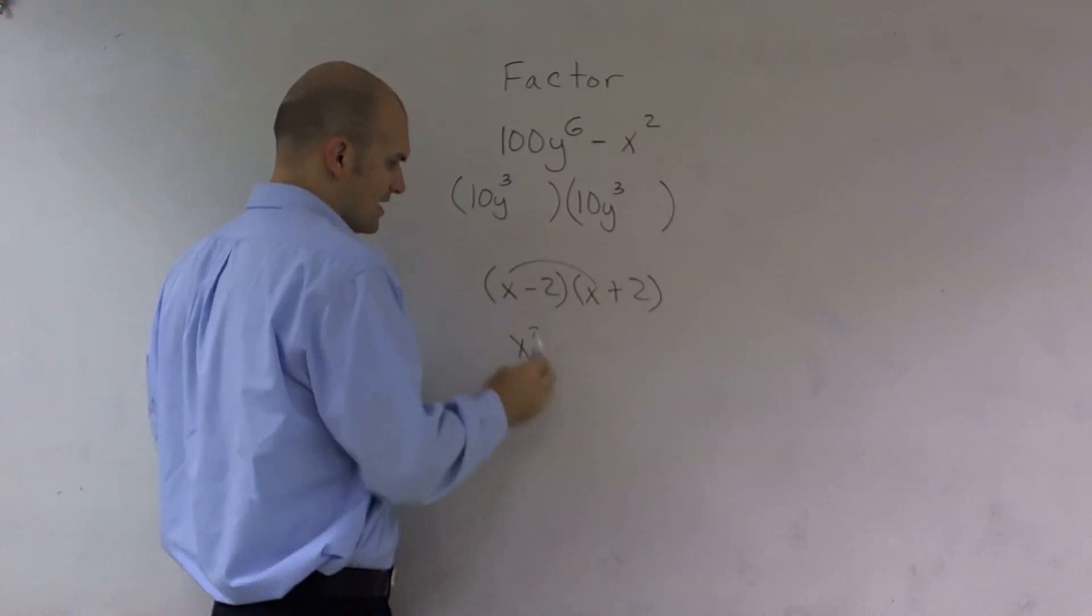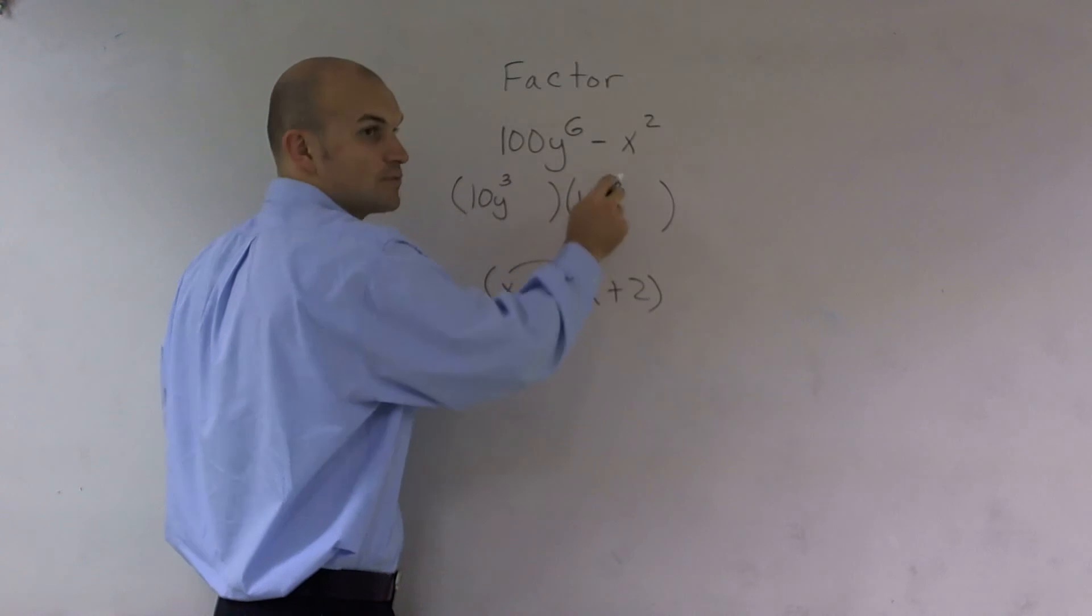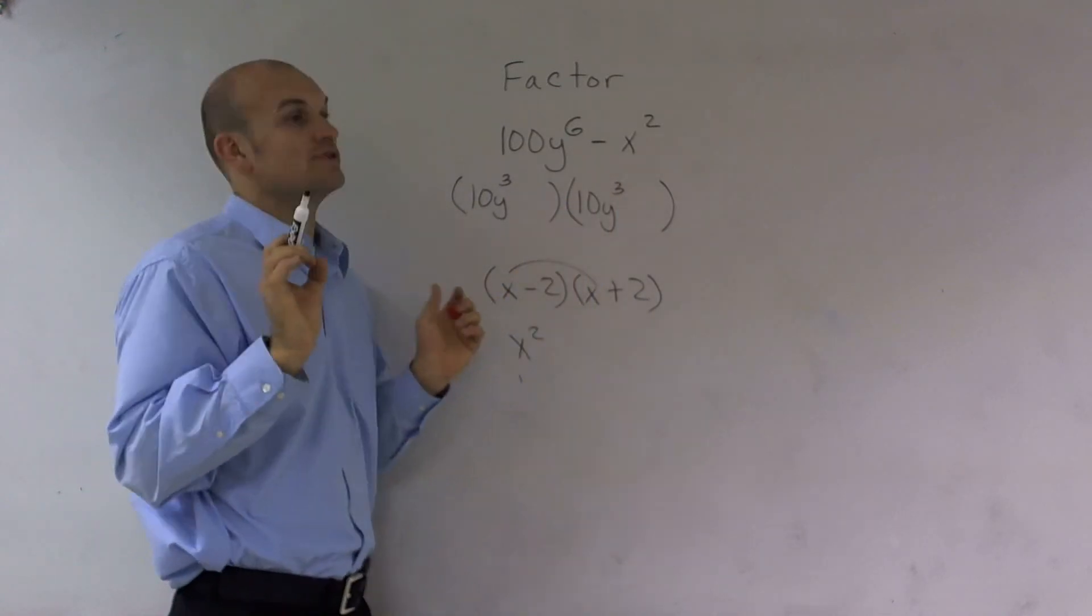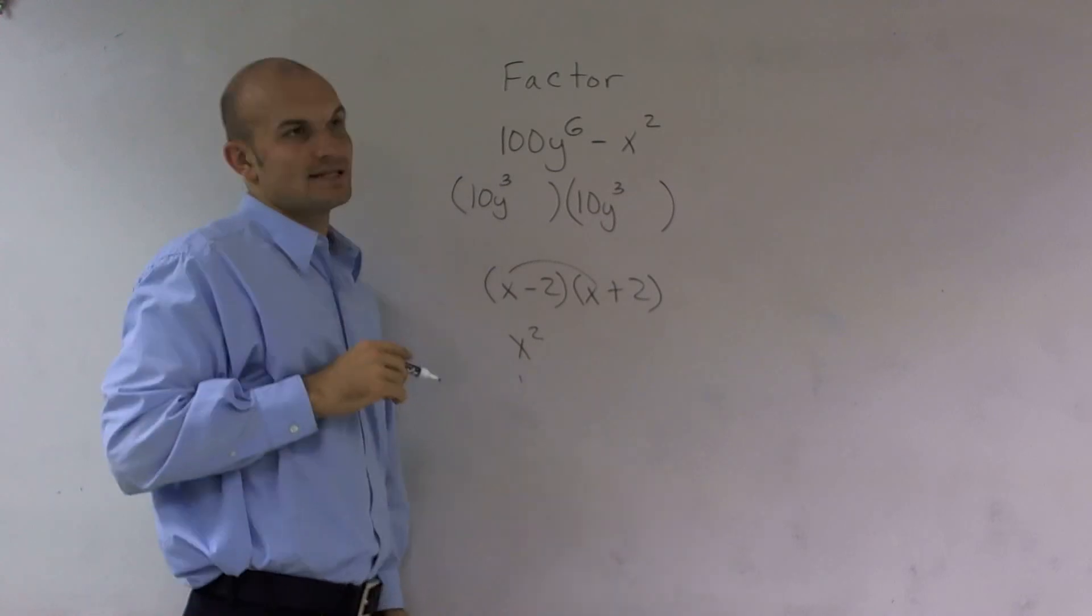And if you think about that, 10y^3 times 10y^3 is 10 times 10 is 100. y^3 times y^3, remember, you add exponents. When you multiply, you add the exponent. So that would give me 100y to the sixth.